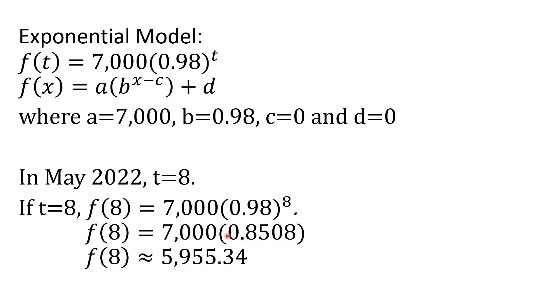Now, when you multiply these two factors, the approximate value of F of 8 is 5,955.34 or 5,955. This will be the projected population in May 2022 in Town G.